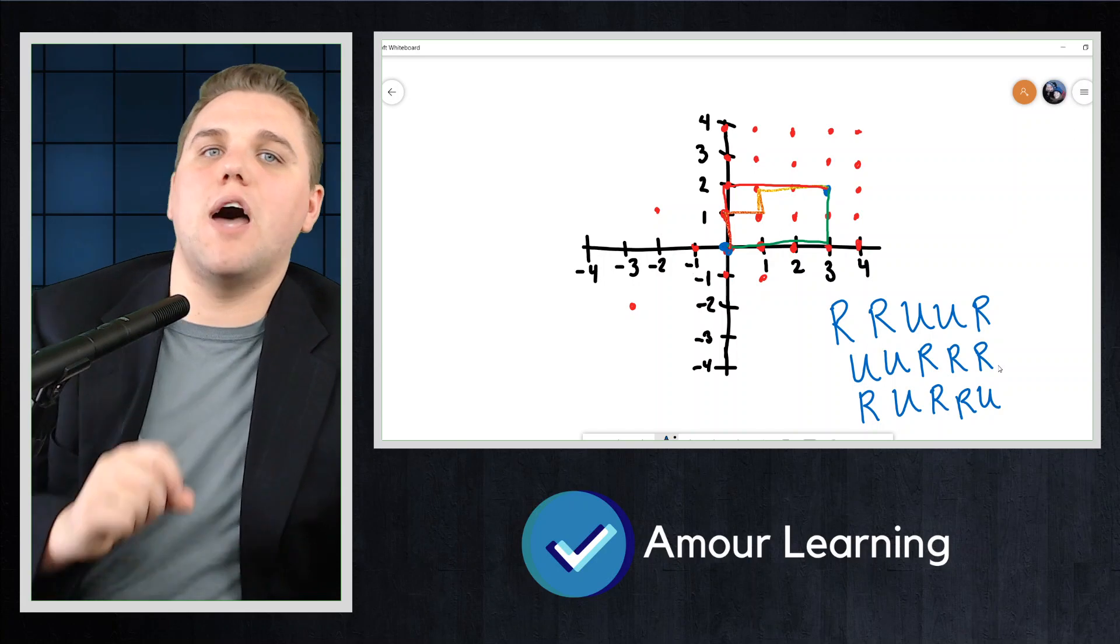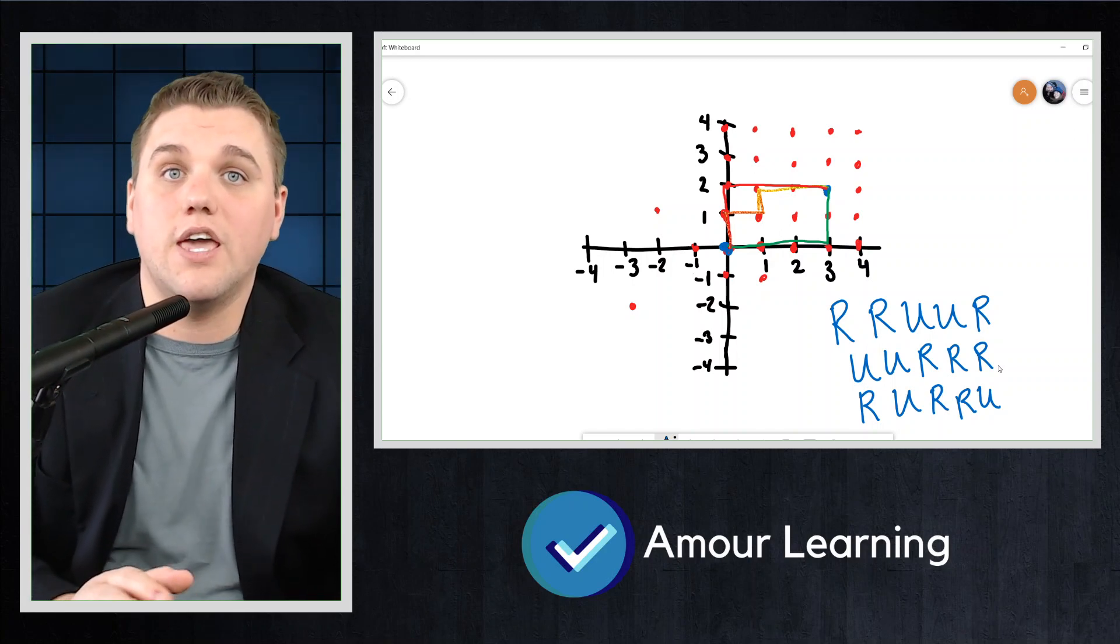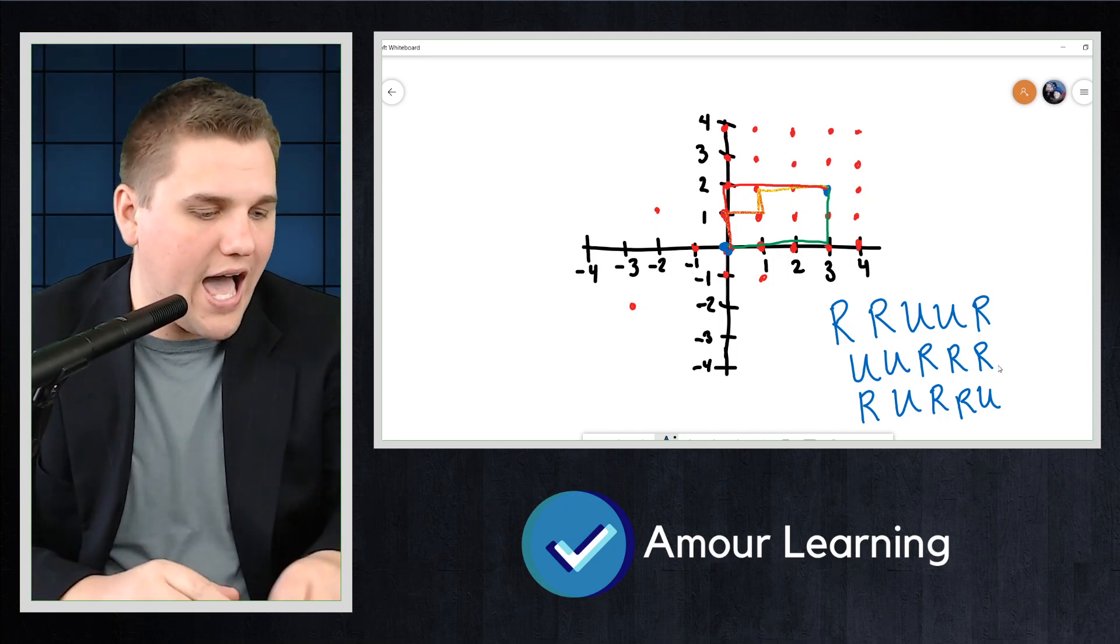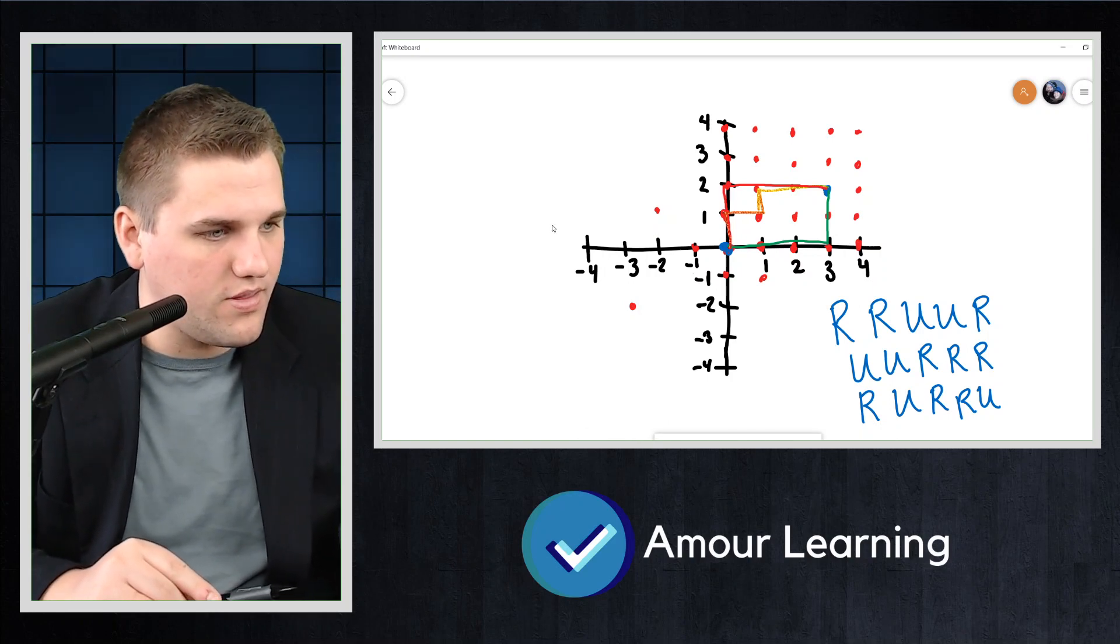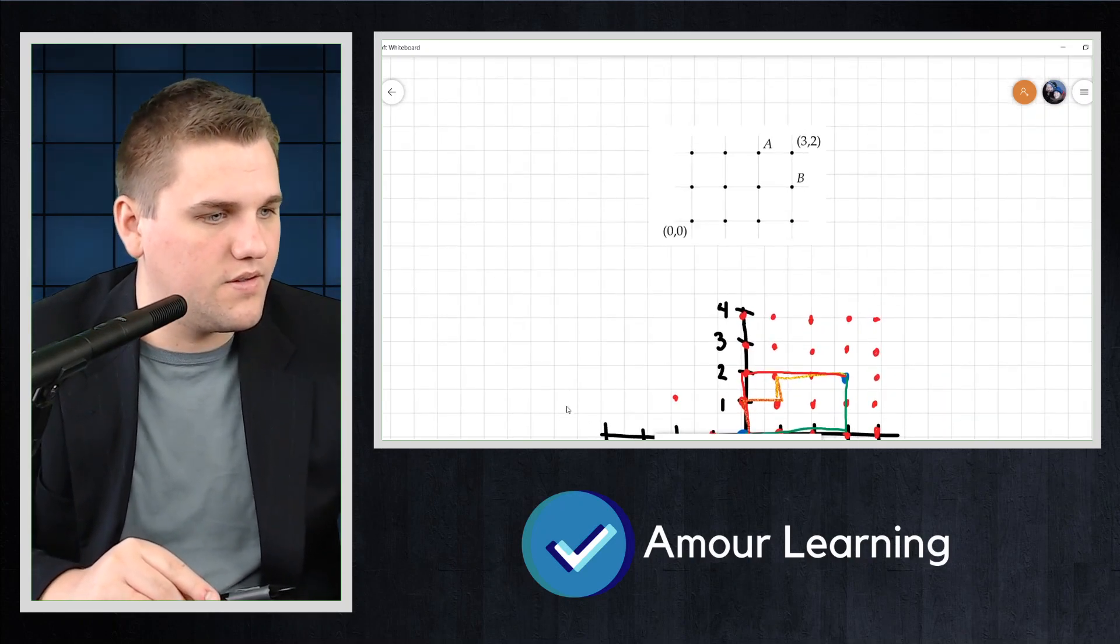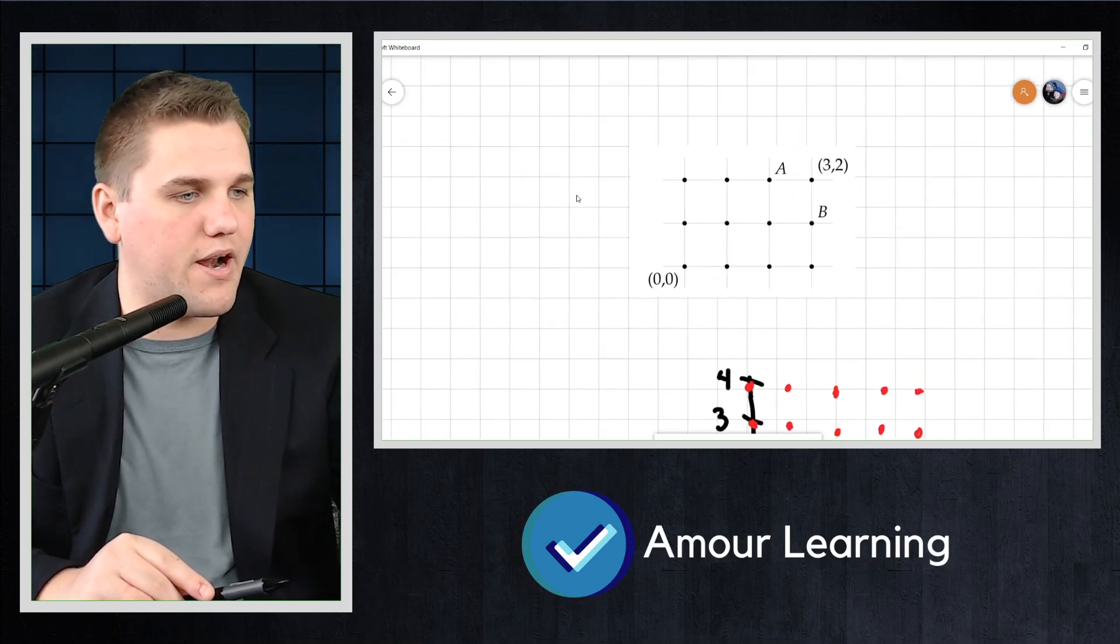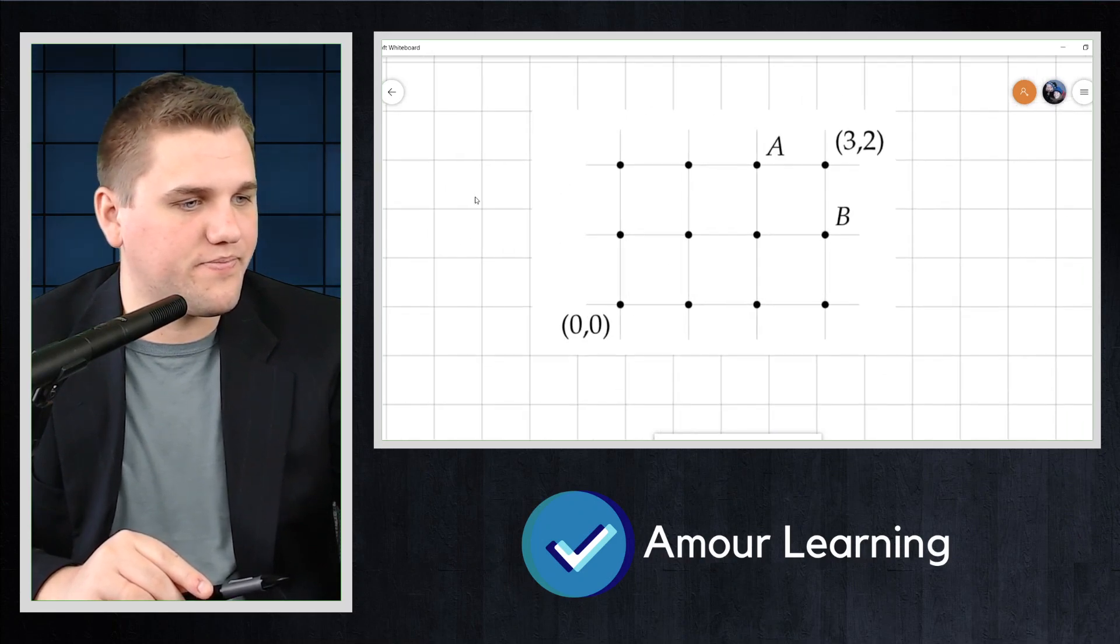The correspondence between bit strings and lattice paths does not stop there. Here's another way to count lattice paths. Consider the lattice shown here. Let me pull it up here. We're going to zoom in a little bit so you can see it better.